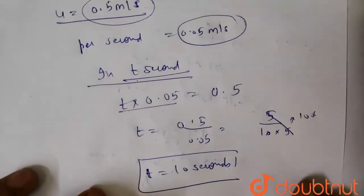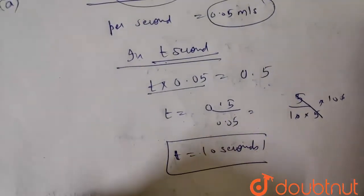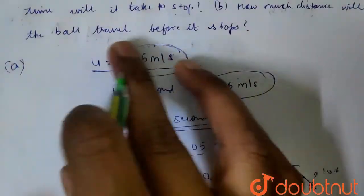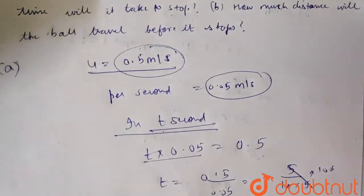So how much time will it take? 10 seconds. In 10 seconds its velocity is 0. Okay, so I can tell you (b) how much distance will the ball travel before it stops? How much distance will the ball travel before it stops?